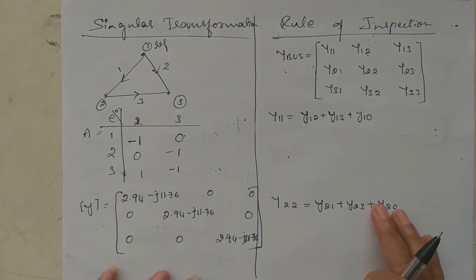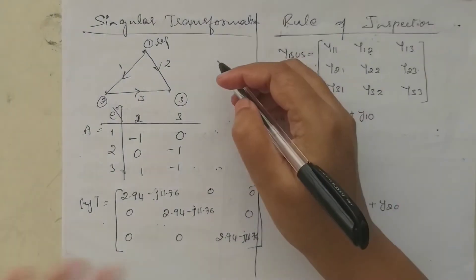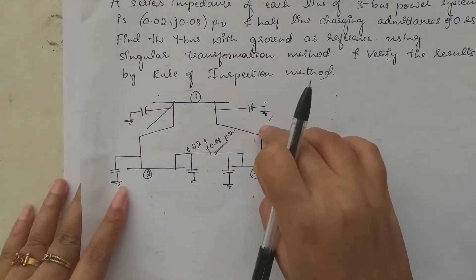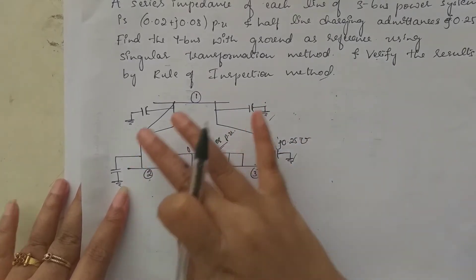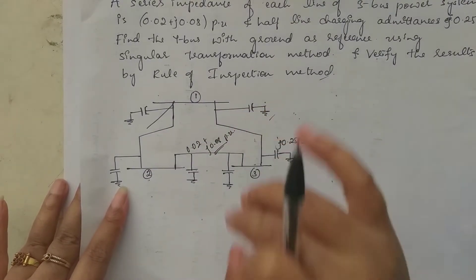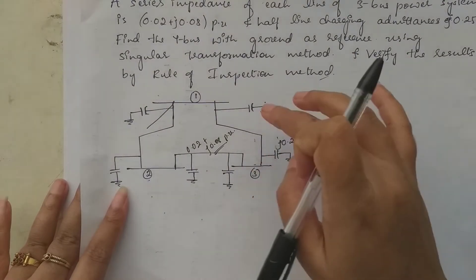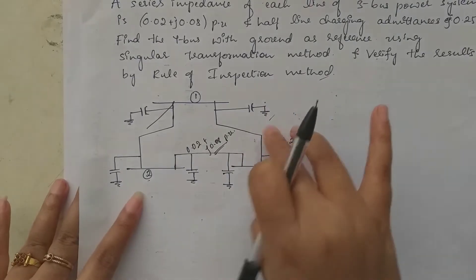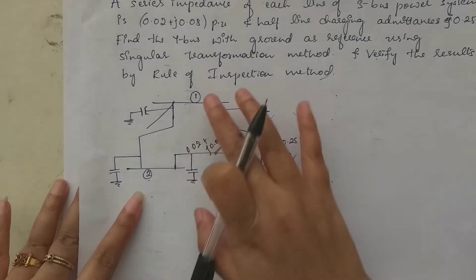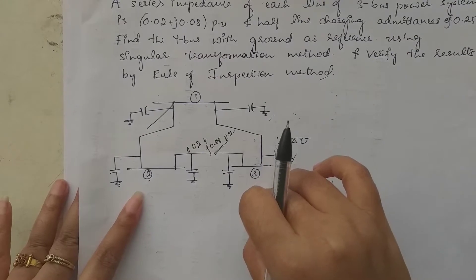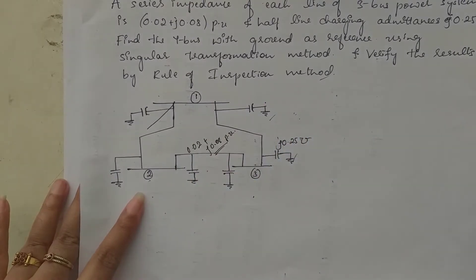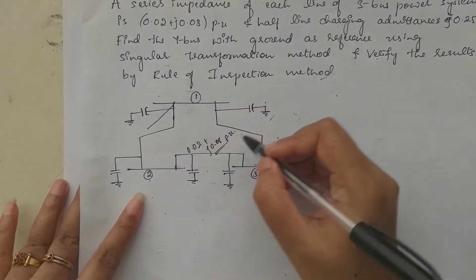In the singular transformation method, we are going to neglect the half-line charging admittance — we are not going to consider it. If mutual coupling is present we would consider it, but for half-line charging admittance we neglect it. So the remaining nodes are one, two, and three, and even though grounded, the half-line charging admittances are not considered.